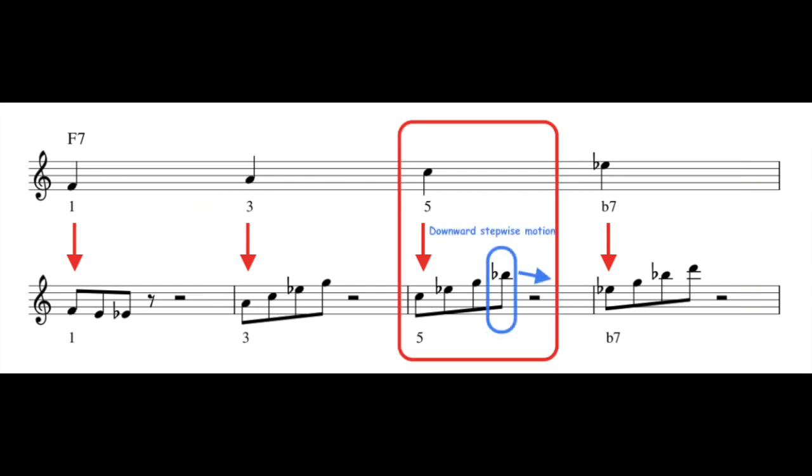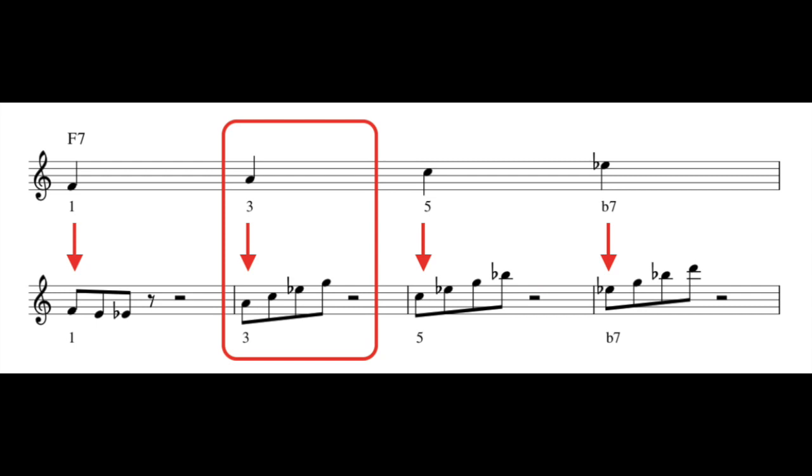Now from that last note, the Bb, we can once again do downward stepwise motion to A, and go through the line that begins on A, the 3rd.